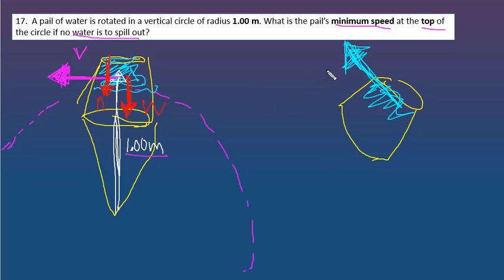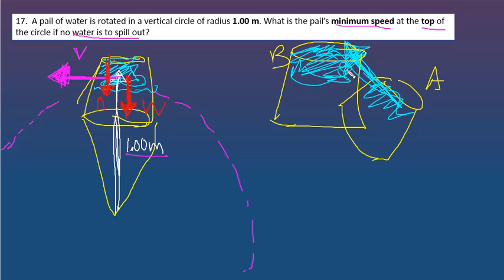So what happens is the bucket through the centripetal force of the tension moves from point A to point B. And the water, I hope this makes sense to you, is literally, by trying to fly off tangent, it slams itself into the bottom of the bucket there, which creates a downward normal force.